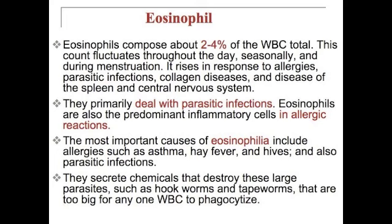Eosinophils compose a portion of the total white blood cell count. This count fluctuates throughout the day, seasonally, and during menstruation, and rises in response to allergies, parasitic infections, collagen diseases, and diseases of the spleen and central nervous system. The eosinophil primarily deals with parasitic infections and is also the predominant inflammatory cell in allergic reactions. The most important causes of eosinophilia include allergies such as asthma, hay fever, and hives, and also parasitic infection. They secrete chemicals that destroy large parasites such as hookworms and tapeworms that are too big for any white blood cell to phagocytize.